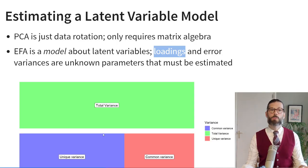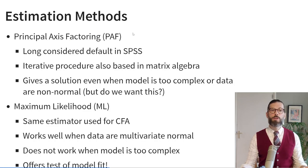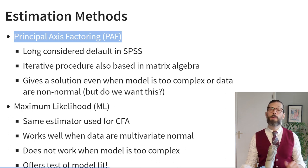We assume that there is total variance in our items, and that total variance breaks down into common variance that can be explained by the latent variables, and unique variance attributed to error variance. We have several distinct techniques for estimating those unknown model parameters. The first technique is principal axis factoring, long considered the default method particularly in SPSS. It's an iterative procedure with a basis in matrix algebra, able to give a solution even when your model is too complex or your data are not normally distributed. So it's more robust to violations of basic assumptions — but do we always need to get a result even if our model is too complex to get a reliable answer?